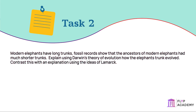Darwin's theory of evolution states that there is variation within a species, so there would have been many elephants with different sized trunks. Those with longer trunks would have been able to reach more food, so would have been healthier and would have lived longer, giving them more chance to breed. Elephants with shorter trunks would have had less food, so would not have lived as long or bred as much.